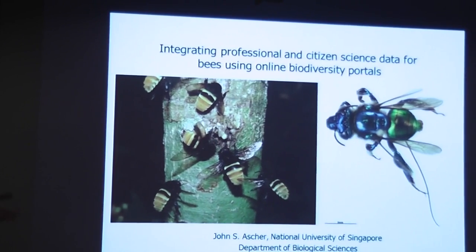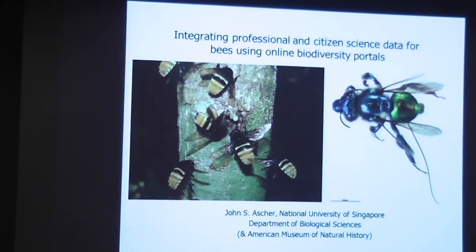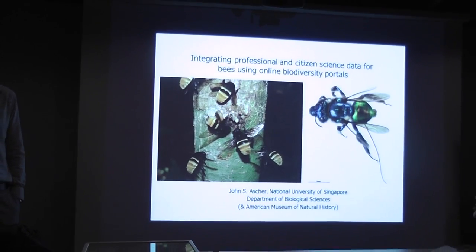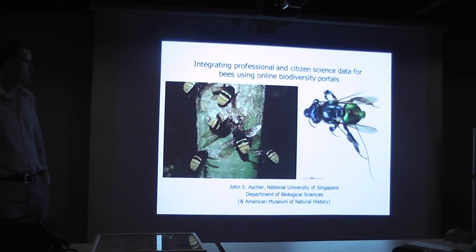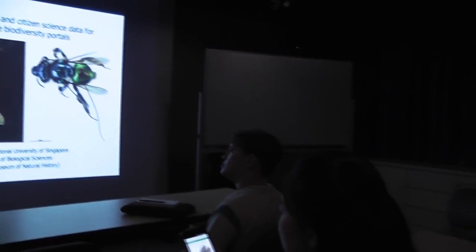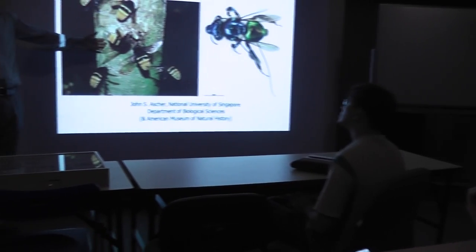The general idea for this talk is to show how the professional bee data that my colleagues work on in museums can integrate with the so-called citizen science — regular people out there with cameras taking photos of bees. At this point, the citizen science and professional data are starting to blur, because when you get photos like this, they get better and better and you can easily identify the species.